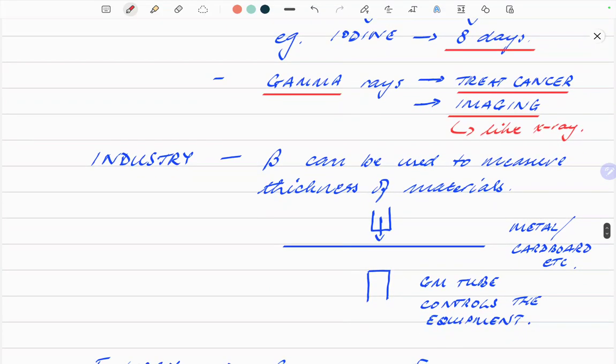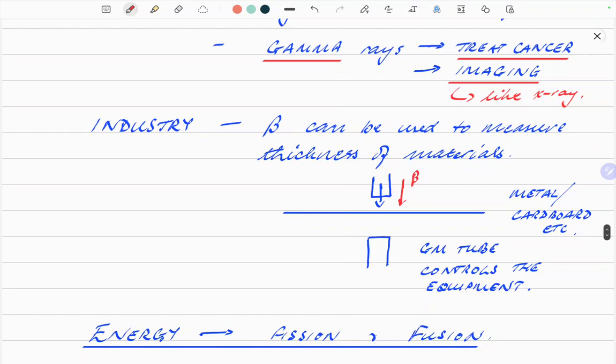Industry. Another one is beta emission, beta particles. Beta particles can be used to measure thickness of materials. For example, you've got some form of metal foil, cardboard being produced, like kitchen foil from the shops. When that's rolled out to make sure that it's of the right thickness, beta particles, electrons, are shot through. If the foil is too thick, the beta won't go through. If it's too thin, then the beta is going to go straight through and there'll be too much of it.